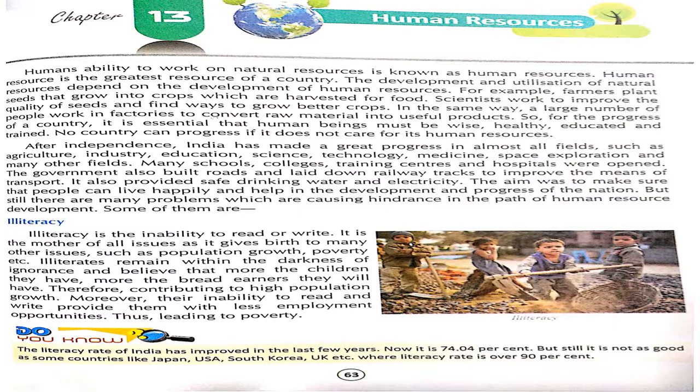People believe that having more children means more hands to work, but this thinking keeps families in poverty. If we reduce the number of children — for example, having two children instead of three — we can reduce poverty and control population growth.